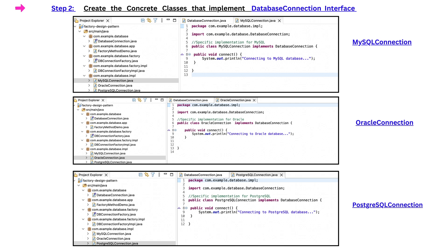Step 2 is to create the concrete classes that implement the DatabaseConnection interface. The first class is the MySQLConnection class that implements DatabaseConnection interface. The second class is the OracleConnection class that implements DatabaseConnection interface. The third class is the PostgreSQLConnection class that implements DatabaseConnection interface.